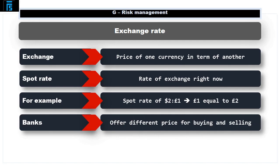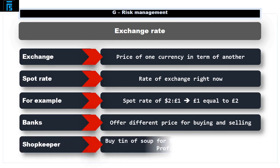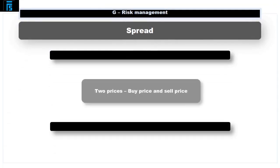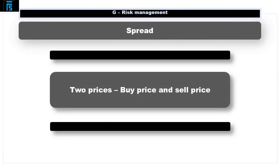Banks make their money by offering us a different price for buying as opposed to selling. A shopkeeper does exactly the same thing — they might buy a tin of soup from their supplier for $0.75 and sell it to their customer for $1, making $0.25 profit. Banks offer what is known as a spread, which means two prices: a buy and a sell price.